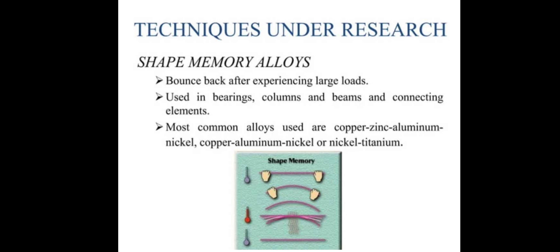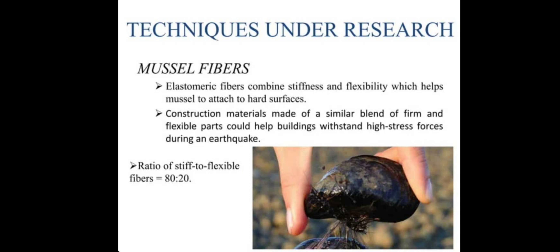Now, let's look at techniques under research. The first is shape memory alloys. These bounce back after experiencing a large load of building material. They are used in bearings, columns, beams, and connecting elements. The most common alloys are copper-zinc-aluminum-nickel or nickel-titanium. Another technique under research is muscle fibers, where elastomeric fibers combine stiffness and flexibility, helping to attach to hard surfaces. Construction material made of a similar blend of firm and flexible parts could help buildings withstand high stress forces during an earthquake. The ratio of steel to flexible fibers is 80:20.